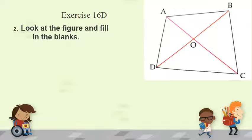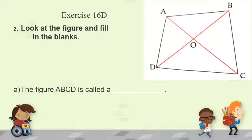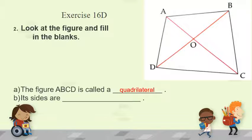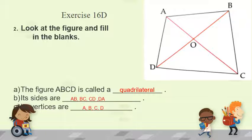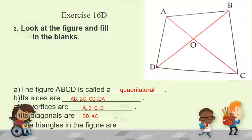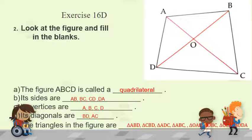Now let's answer the following questions. The figure ABCD is called a quadrilateral. Its sides are AB, BC, CD, and DA. Its vertices are vertex A, vertex B, vertex C, and vertex D. Its diagonals are diagonal BD and diagonal AC. The triangles inside this quadrilateral are: triangle ABD, triangle CBD, triangle ADC, triangle ABC, triangle OAB, triangle OBC, triangle OCD, and triangle ODA.